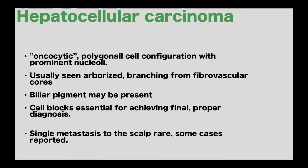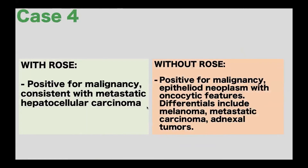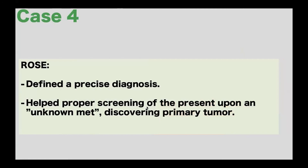We concluded: metastatic hepatocellular carcinoma to the scalp — a very rare event with only some reported cases in the literature. Additional screening revealed a liver lesion; the patient had been asymptomatic with no prior liver imaging. He presented with a scalp metastasis and the primary liver tumor was discovered after our diagnosis. The patient is now being treated for metastatic hepatocellular carcinoma. Hepatocellular carcinoma often has this oncocytic, polygonal cell configuration with prominent nuclei, arborizing from fibrosvascular cores, and biliary pigment may be present. With ROSE: metastatic hepatocellular carcinoma; without ROSE: positive for malignancy — epithelioid neoplasm with oncocytic features, differentials including melanoma, metastatic carcinoma, or adnexal tumors.